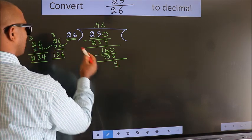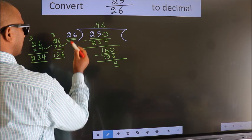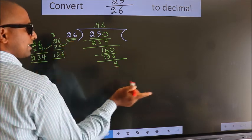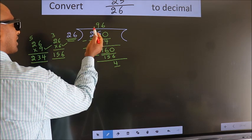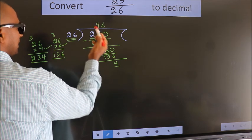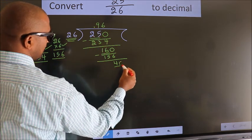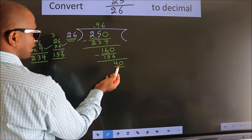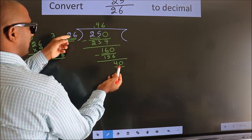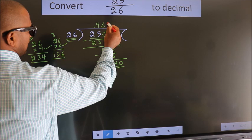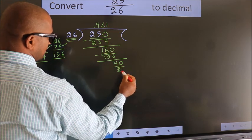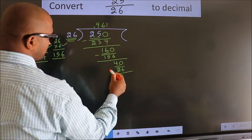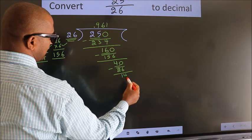Here we have 4, here 26. 4 is smaller than 26. We already have the decimal, so we can directly take 0. So 40. A number close to 40 in the 26 table is 26 — 26 once is 26. Now we subtract. We get 14.